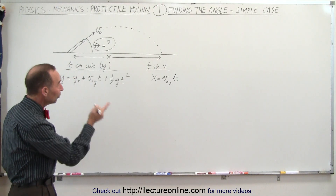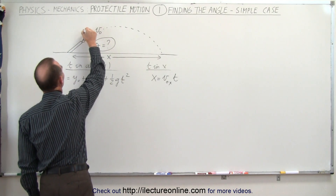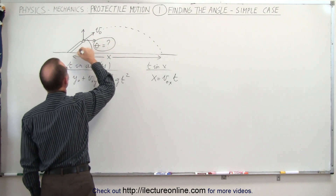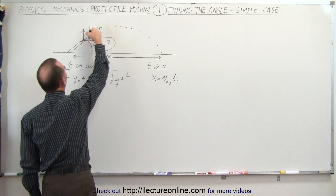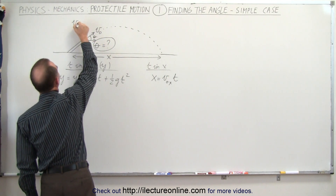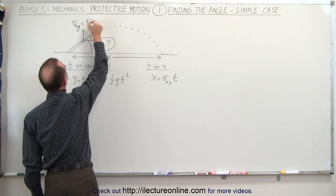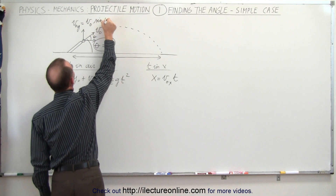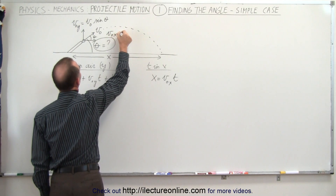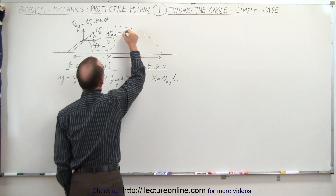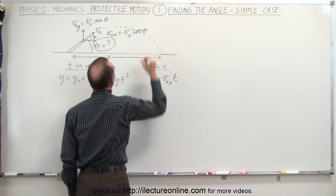To do this problem we need both the x and y components of the initial velocity. The angle is theta, so in the y direction: v initial y equals v initial times the sine of theta. And in the x direction: v initial x equals v initial times the cosine of theta.